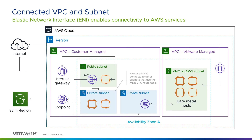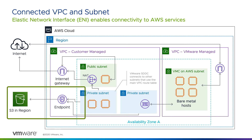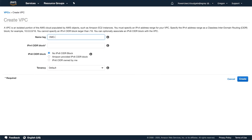If your applications store and retrieve data from Amazon S3, you can create a VPC gateway endpoint that provides a direct connection from your VMware Cloud on AWS software-defined data center. While it is possible to access S3 over the internet, setting up a direct path through an endpoint is better because it routes traffic over a secure and reliable connection that doesn't require an internet gateway or NAT.